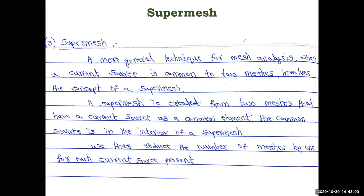Now if a current source — dependent or independent — is present between two meshes, say mesh one and mesh two, we call that combination a super mesh. We write one combined mesh equation for both meshes together, and then equate the two mesh currents via the constraint equation. A super mesh is created from two meshes that share a current source as a common interior element, reducing the number of mesh equations by one for each such current source. So instead of two separate equations we form one super mesh equation and one constraint equation.